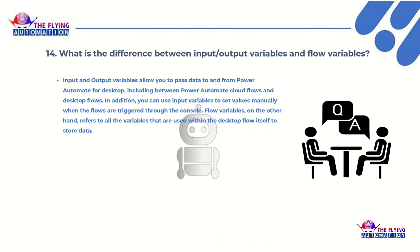Flow variables, on the other hand, refers to all the variables that are used within the desktop flow itself to store data.